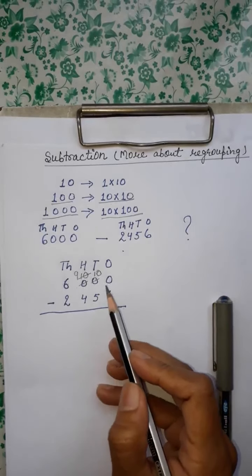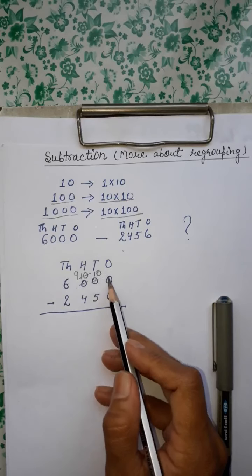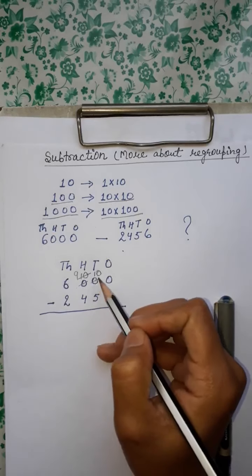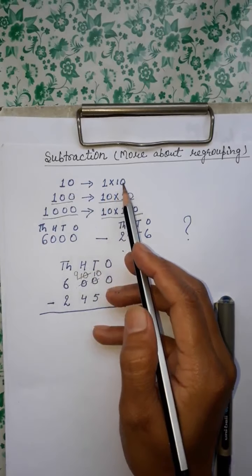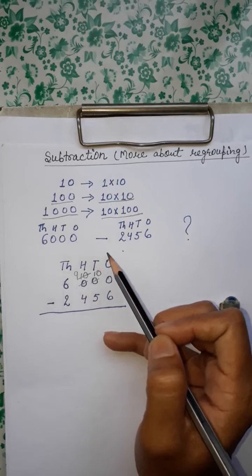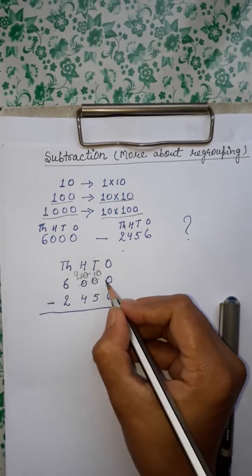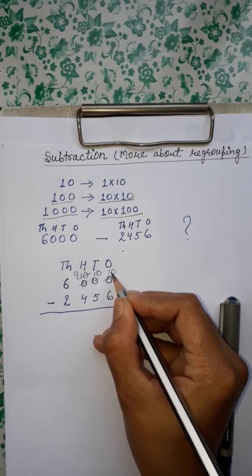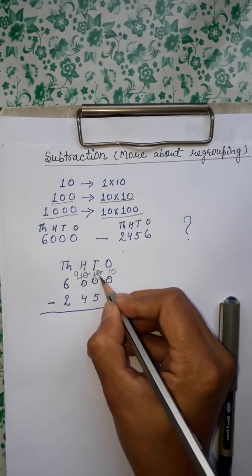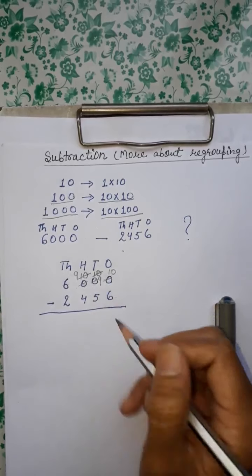Ab rahi 1s ki baat — 1s phir kya karta hai? 10s ne socha mere paas aa gaya, main 1s ko de deta hoon. Again 10 — 10s ko hum kaise likh sakte hain? 1 into 10 — yani kya karenge? Borrow 1 ten and change it into 10 ones. 10 ones ke roop mein ise mil gaya. Jab 10s ne 1s ko diya toh khud 10s ke paas kitna reh gaya? 9. Now start your subtraction.